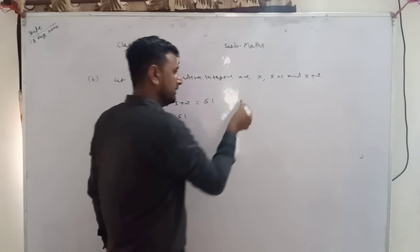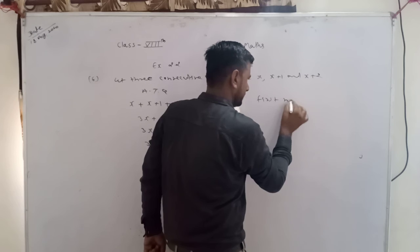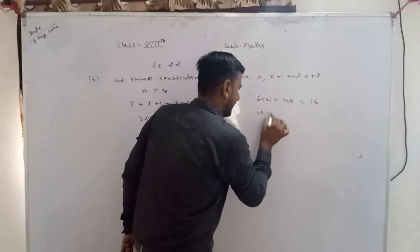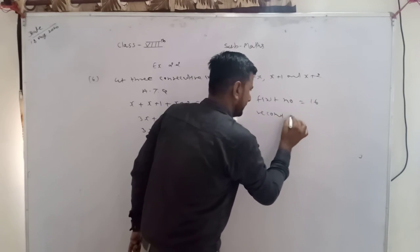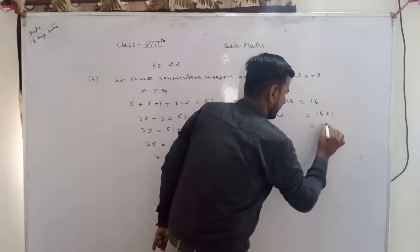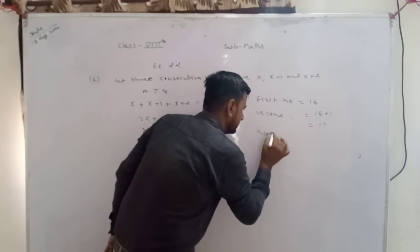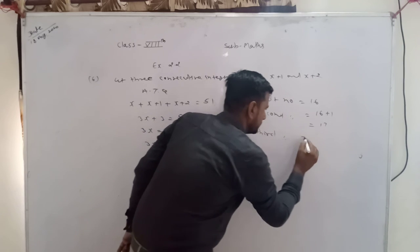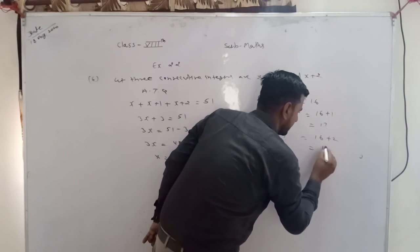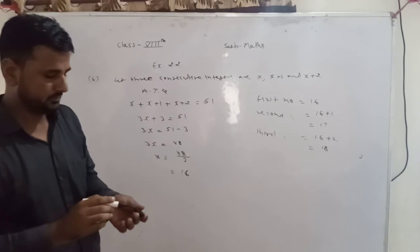48 को 3 से divide करेंगे तो x = 16। तो first number अपने पास x था: first number हो गया 16। Second क्या है x plus 1: 16 plus 1 = 17। Third क्या है x plus 2: 16 plus 2 = 18। तो three consecutive integers हो गए 16, 17, 18।